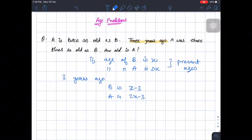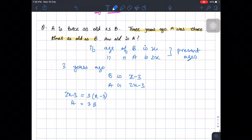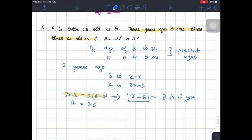Now three years ago A was three times as old as B, so this means 3 times x minus 3 is equal to 2x minus 3. A is three times B. Now solving this equation we will get x is equal to 6, which means B is 6 years and age of A is equal to 12 years.